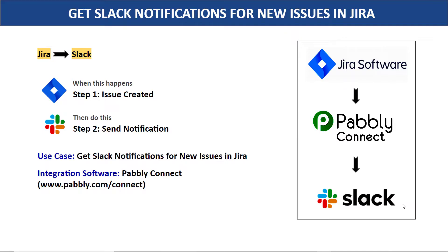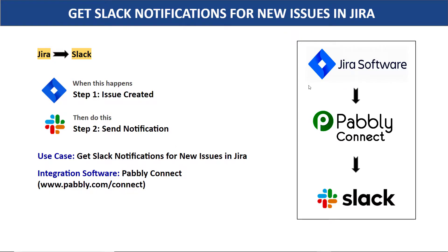You have two choices. The first choice is to copy all the details of this issue from Jira, sort it out, and compose a message, then send it manually on Slack. The problem with this approach is it's very repetitive and tiresome. I would suggest that you bring in some automation so that whenever a new issue is created in Jira, it will automatically send a notification on Slack.